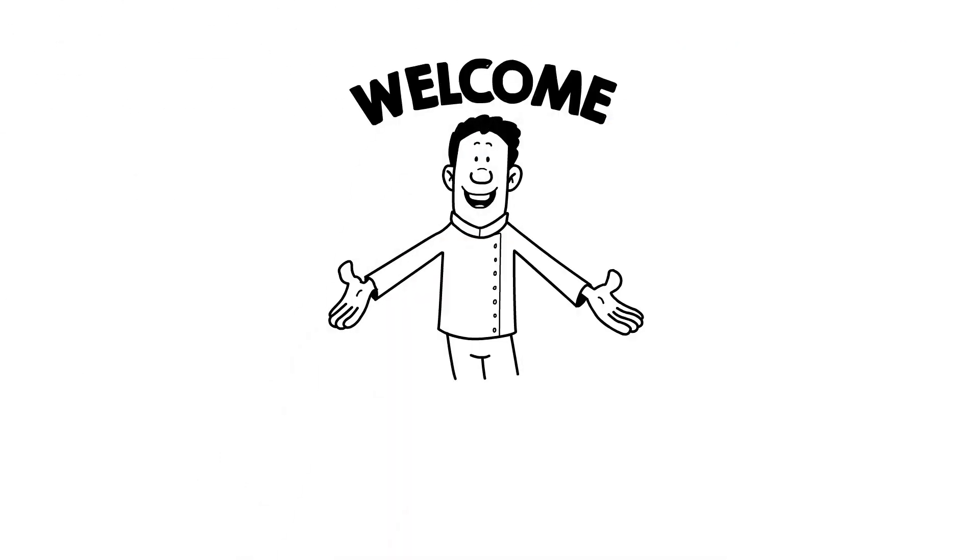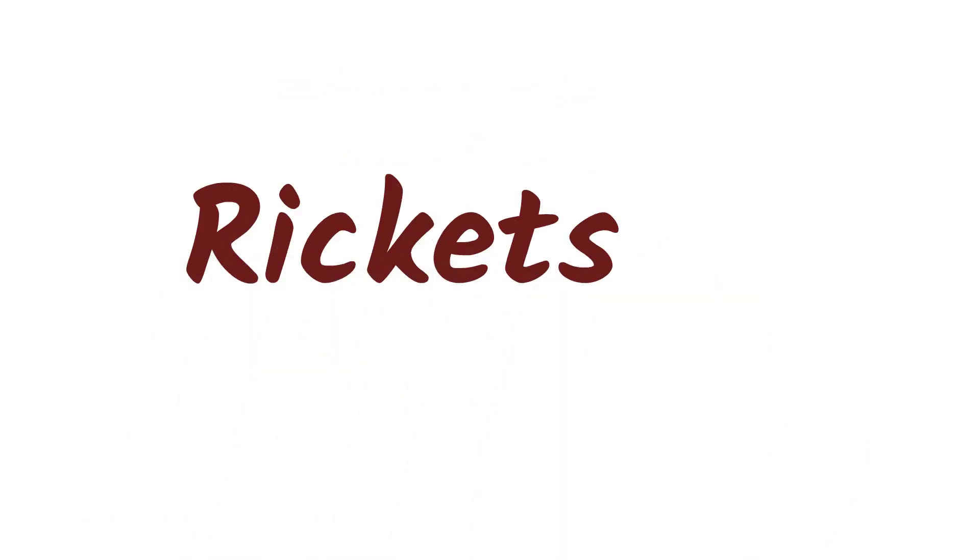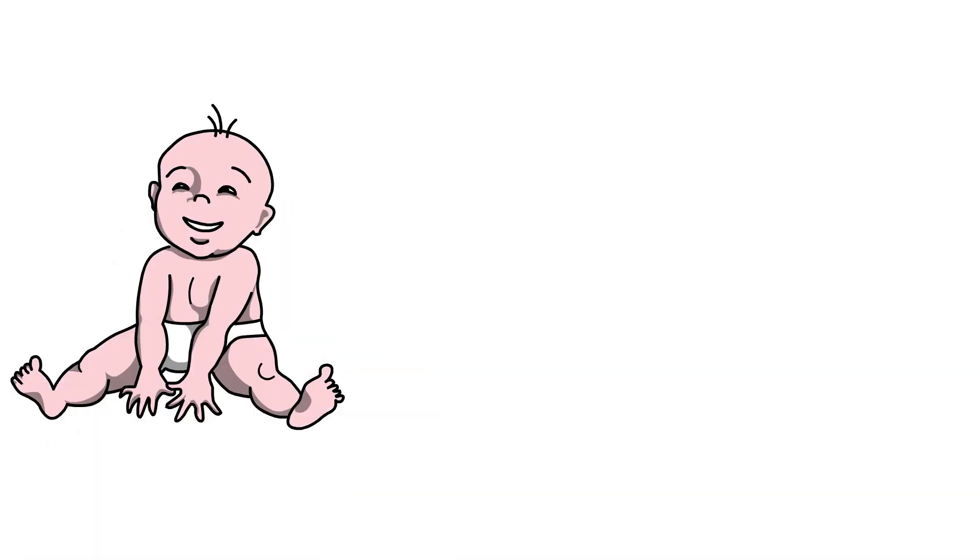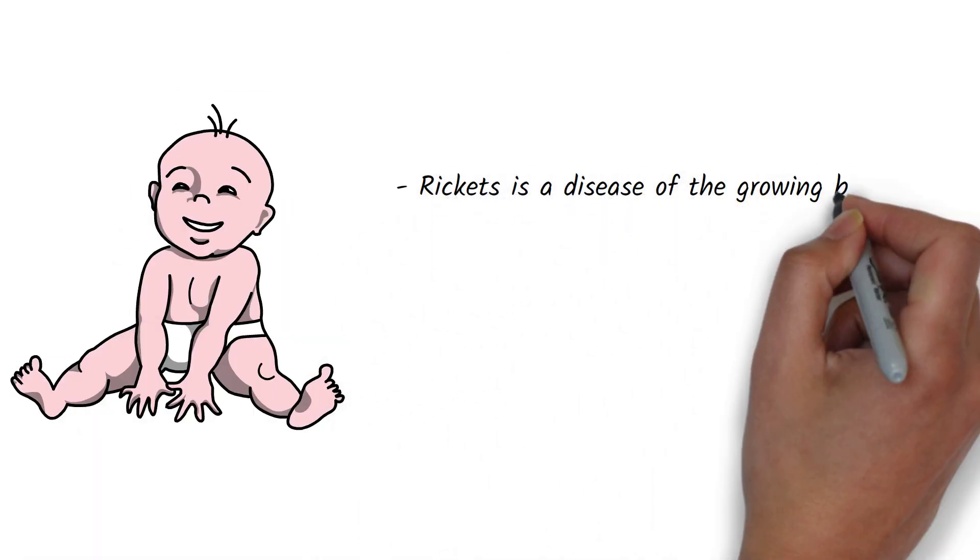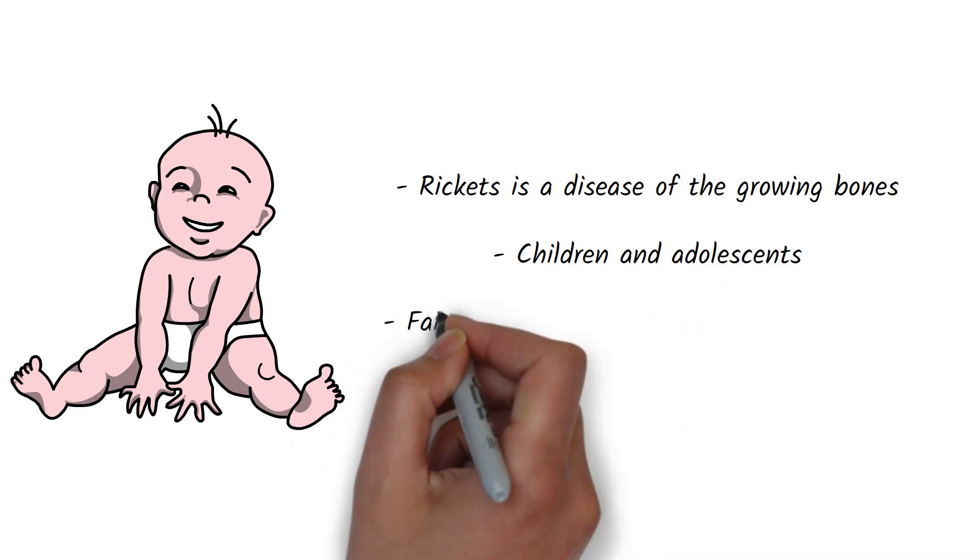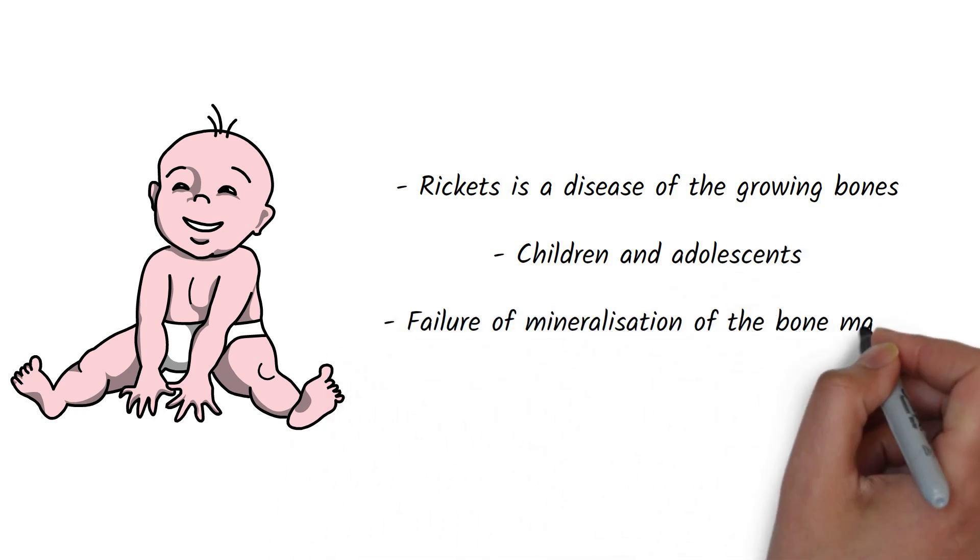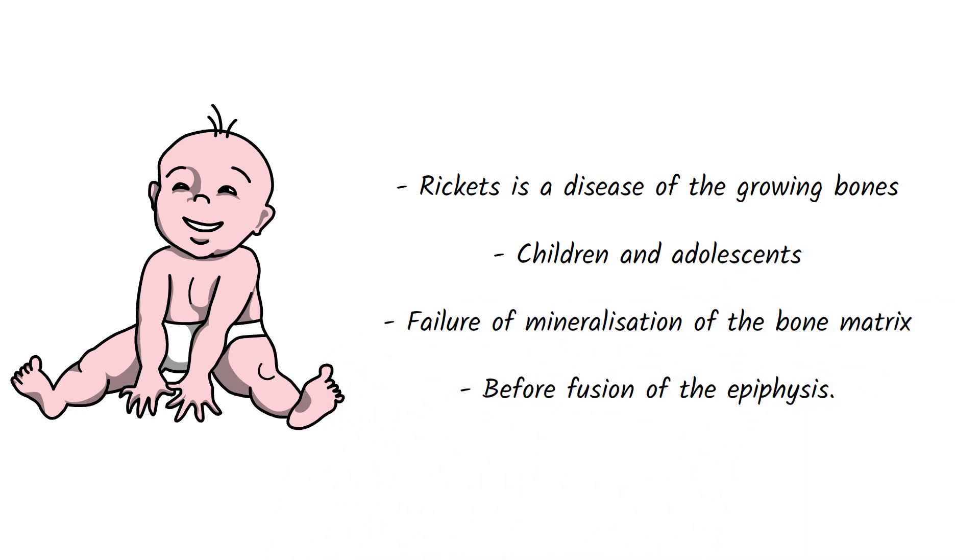Hello everyone, welcome back to Learn with Med Nuggets. In this video, we're going to learn about rickets. Rickets is a disease of growing bones that occurs in children and adolescents due to failure of mineralization of the bone matrix at the growth plate before fusion of the epiphysis.